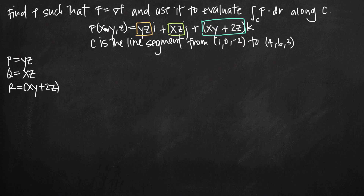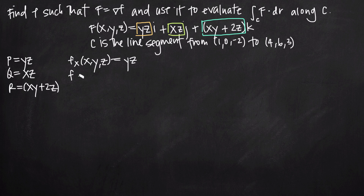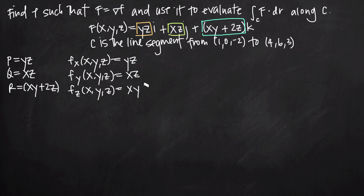Sometimes you have a two-variable function with just x and y, and in that case you just have p and q without an r. But here, because we have three variables x, y, and z, we have p, q, and r. Now, p is the same as the partial derivative of f with respect to x, so ∂f/∂x = yz. Similarly, ∂f/∂y = xz, and ∂f/∂z = xy + 2z.